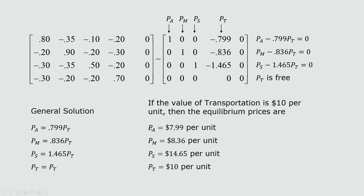Since we're told the price per unit of transportation is $10, we plug in P_T = 10. The equilibrium prices are: agriculture = $7.99 per unit, manufacturing = $8.36 per unit, services = $14.65 per unit, and transportation = $10 per unit. At these prices, the income for each industry equals its expenses, so each ends up with a zero net.